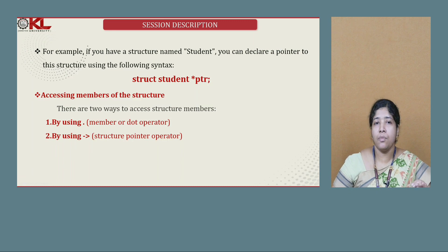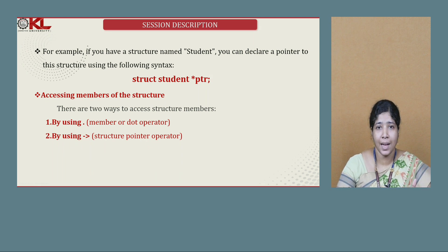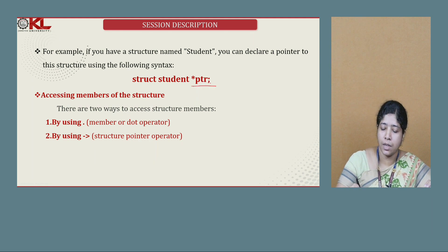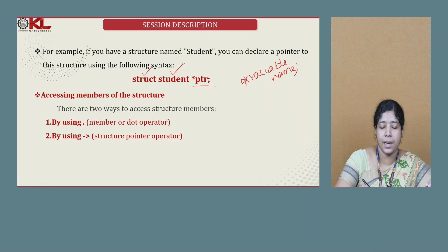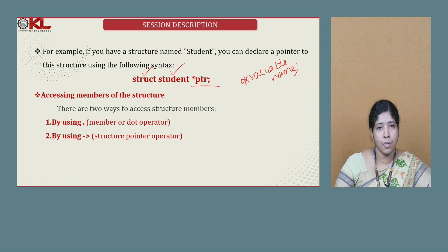Let us see an example. If you have a structure named student and you want to declare a pointer to this structure, the syntax is: struct is the keyword, followed by the tag name and then the variable name. For a structure pointer, you add an asterisk before the variable name. The tag name and structure name remain the same — you just add the asterisk symbol, the same way you did for a single variable pointer or an array pointer.